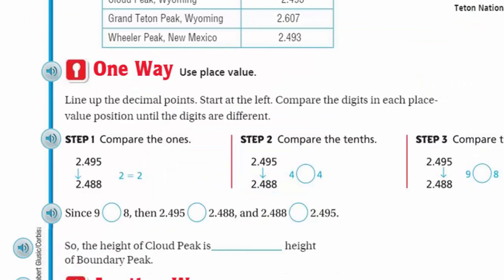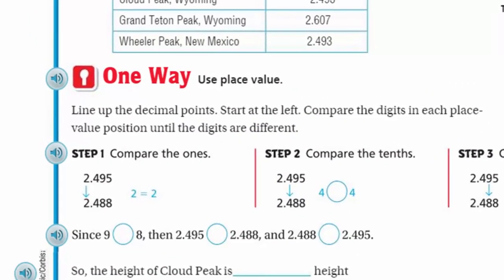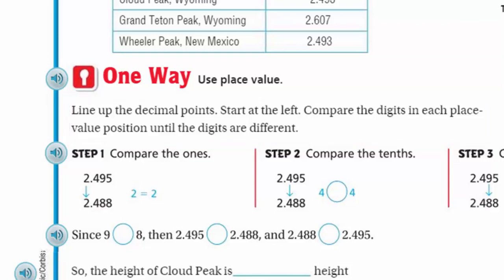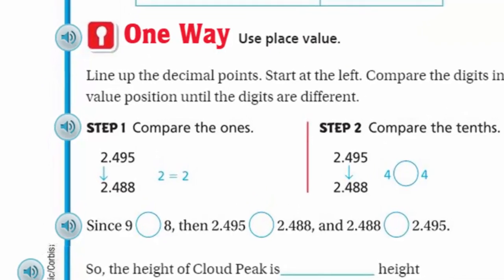It says one way is to use place value. It says we can line up the decimal points. Start at the left. Compare the digits in each place value position until the digits are different. Oh, I like this. This is like when you play. Okay, that's a tie. This is a tie. And then this guy wins. You know what I'm talking about? If you don't, I will show you. It's really fun.